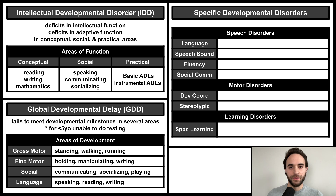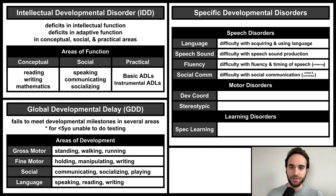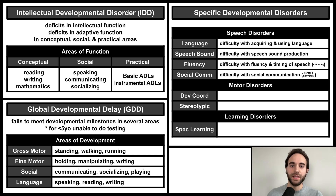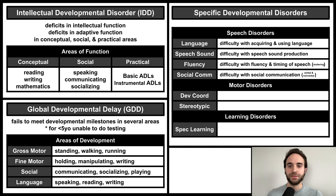Let's move on to the specific developmental disorders. These can be divided into speech disorders, motor disorders, and learning disorders. Speech disorders involve difficulties with different aspects of speech and language. Language disorder involves difficulty acquiring and using language. Speech sound disorder involves difficulty producing specific speech sounds, such as lisping or mispronouncing certain syllables. Fluency disorder involves difficulty with fluency and time patterning of speech — stuttering is an obvious example.